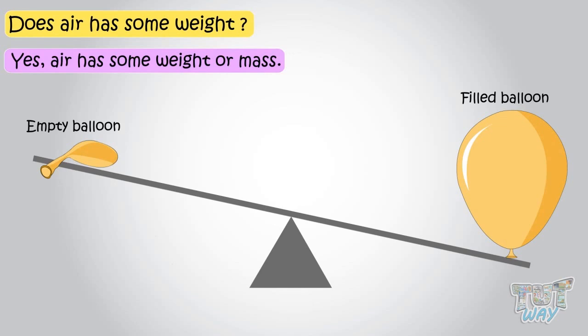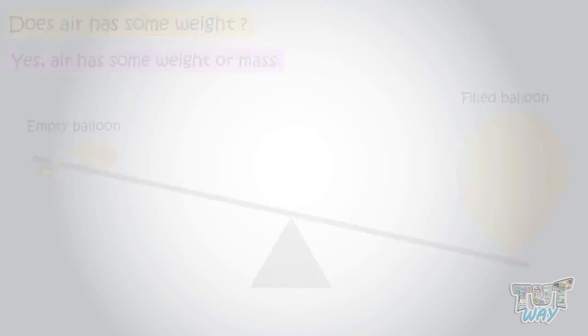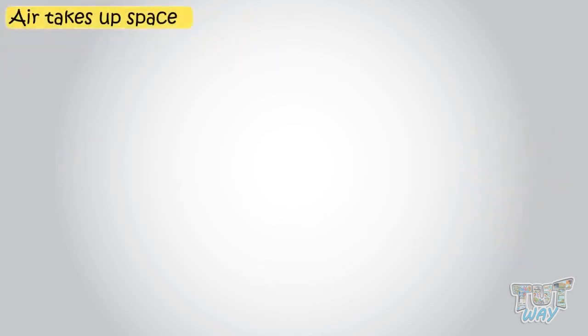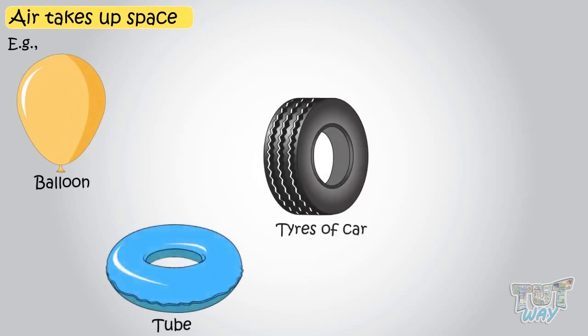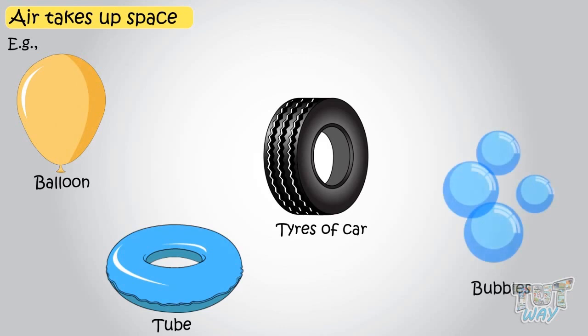Here are some things that show that air takes up space: balloon, tube, tires, bubbles. All these things are inflated because of air in them. It shows that air occupies space.